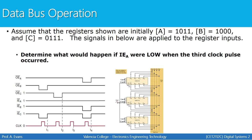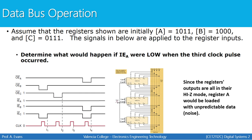For the final question: if input enable A were low at the third clock pulse but no output enables were low at T3, register A would have no data to receive. Since no register is outputting, the bus is in its floating high-Z state, and register A would be loaded with unpredictable data — garbage or system noise. We must ensure that when enabling an input, we also enable a corresponding output; otherwise the input register receives indeterminate data from a floating bus.